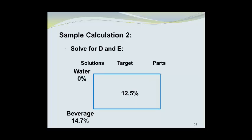Now we will solve for D and E. D will be equal to 14.7 minus 12.5, which is 2.2. E will be equal to 12.5 minus 0, which is 12.5.